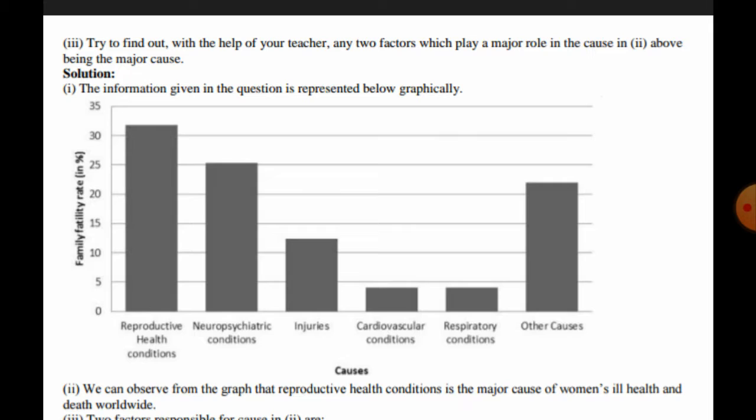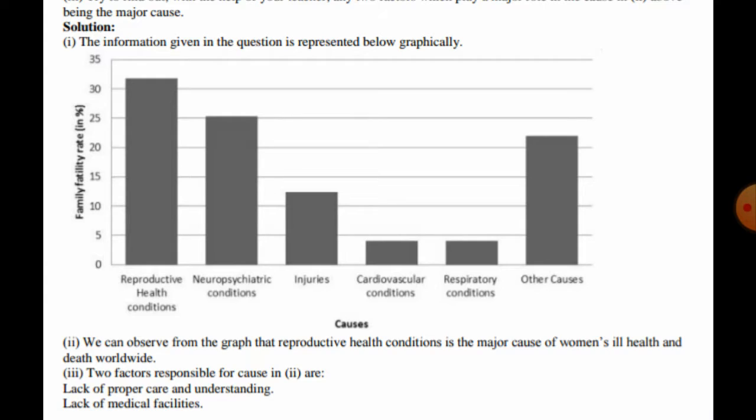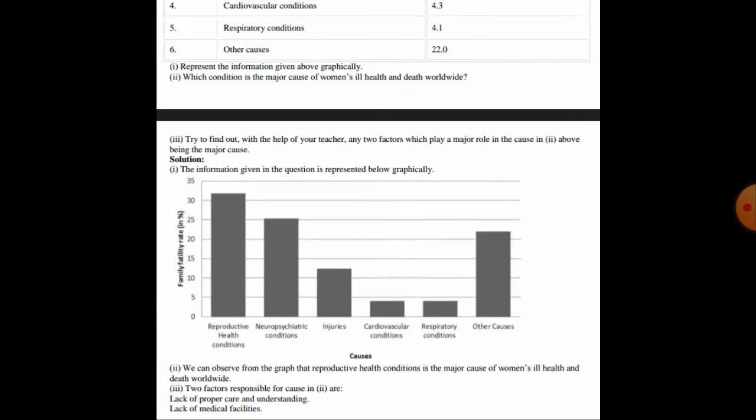We can draw the bars according to the x-axis and y-axis values. From the graph, we can observe that reproductive health condition is the major cause of women's ill health and death worldwide. Two factors responsible for this are: lack of proper care and understanding, and lack of medical facilities. We can improve this condition by opening more hospitals.